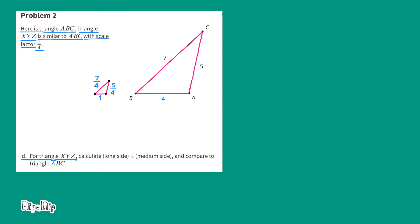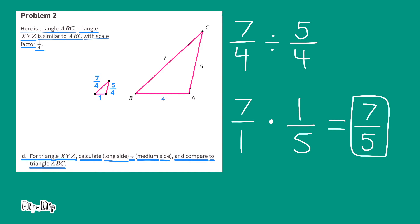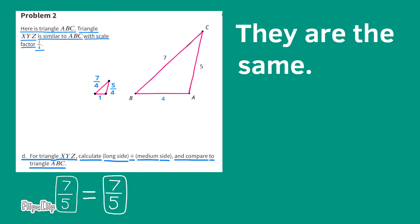Part D: For triangle XYZ, calculate long side divided by medium side and compare to triangle ABC. 7 fourths divided by 5 fourths is equivalent to 7 fourths times 4 fifths, which equals 7 fifths. Now comparing that to triangle ABC: 7 divided by 5 is also 7 fifths. They are the same.